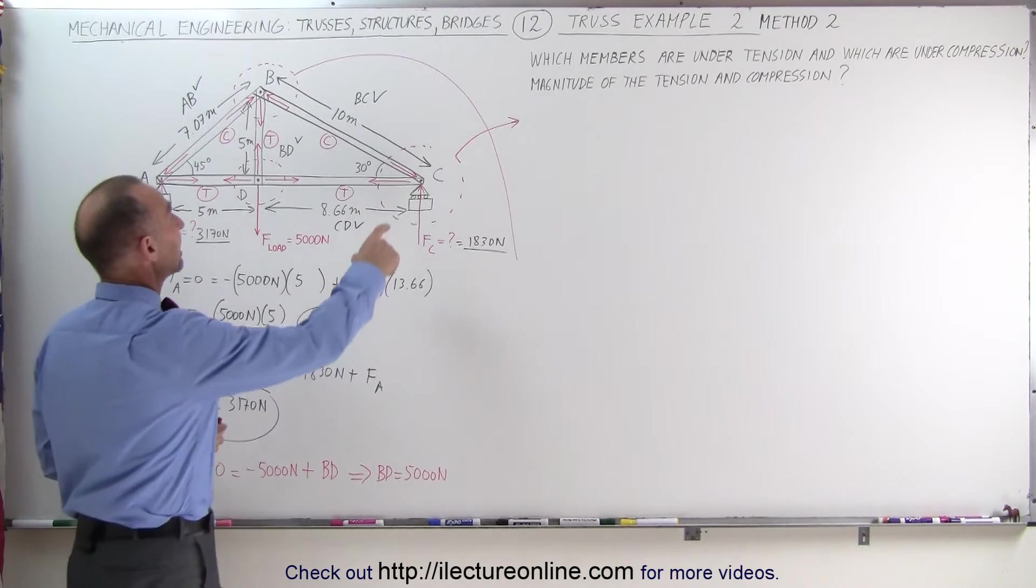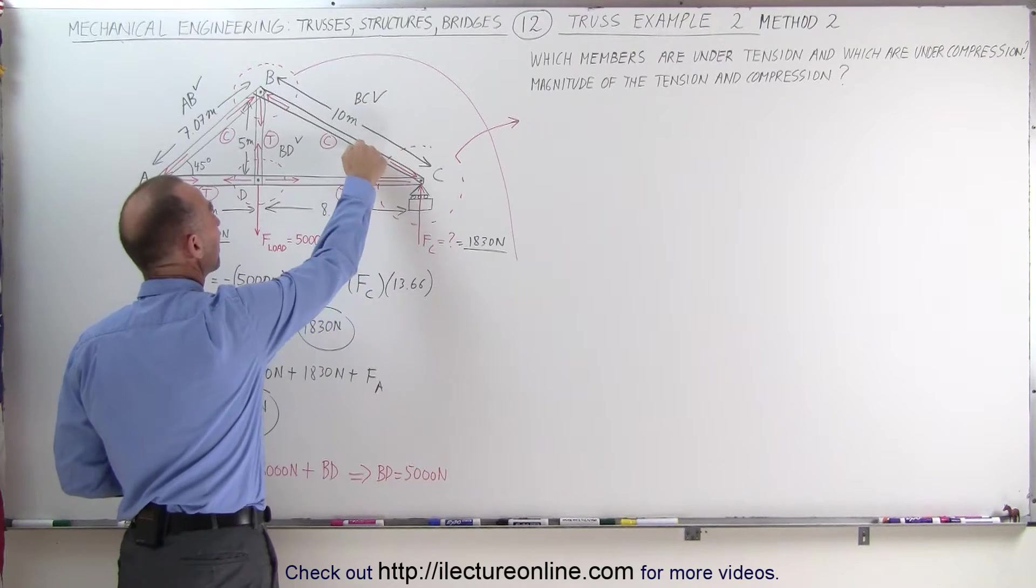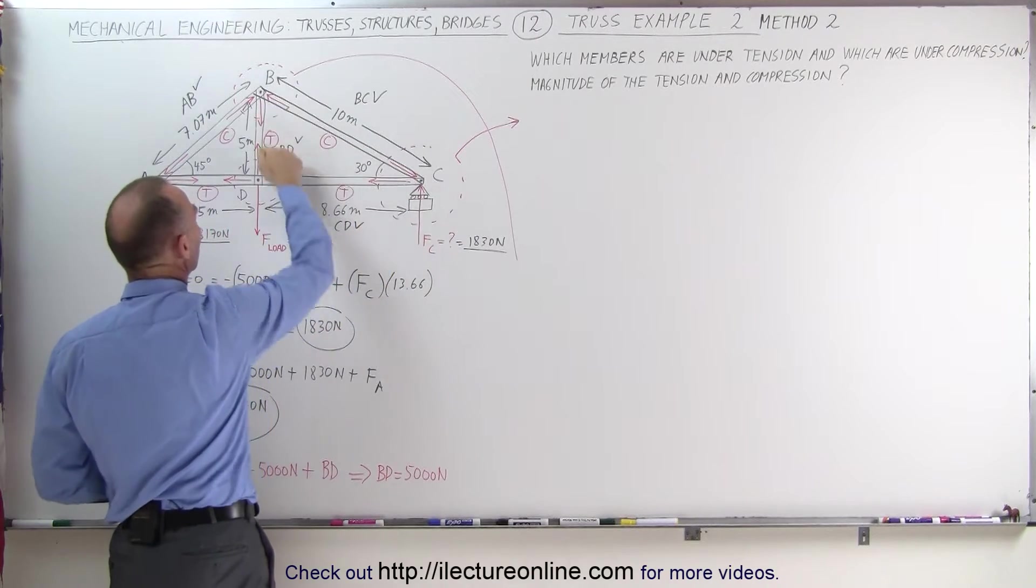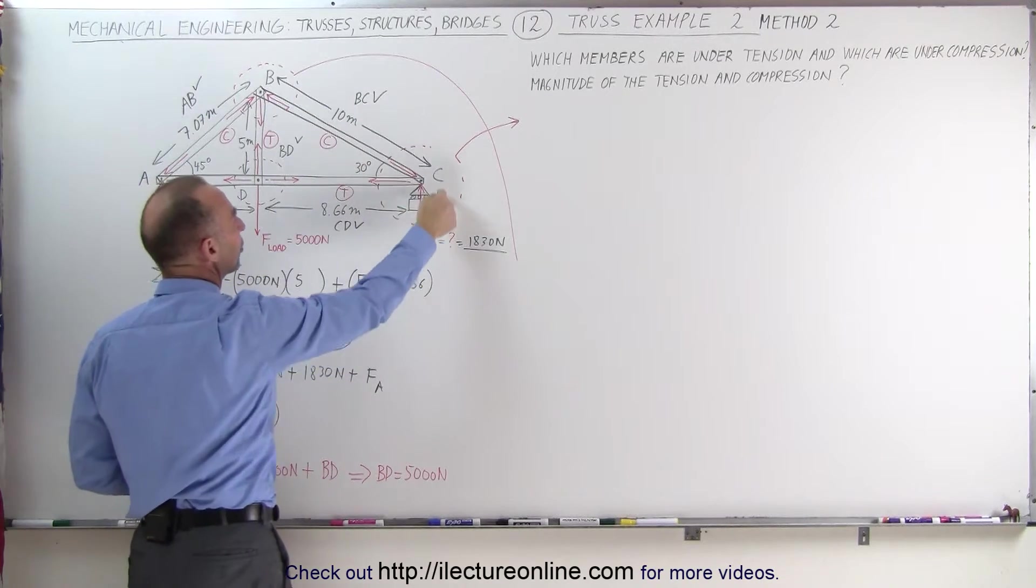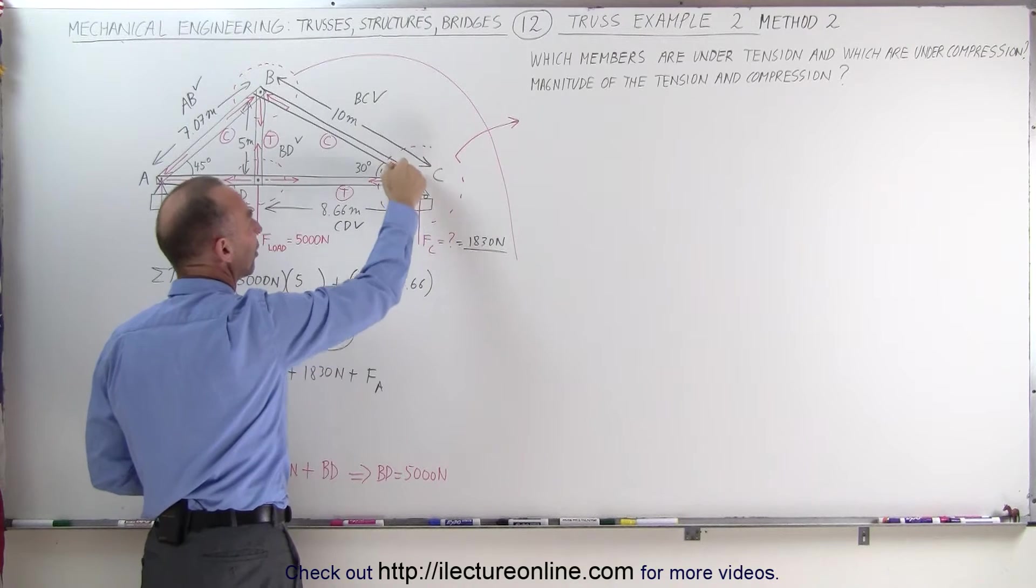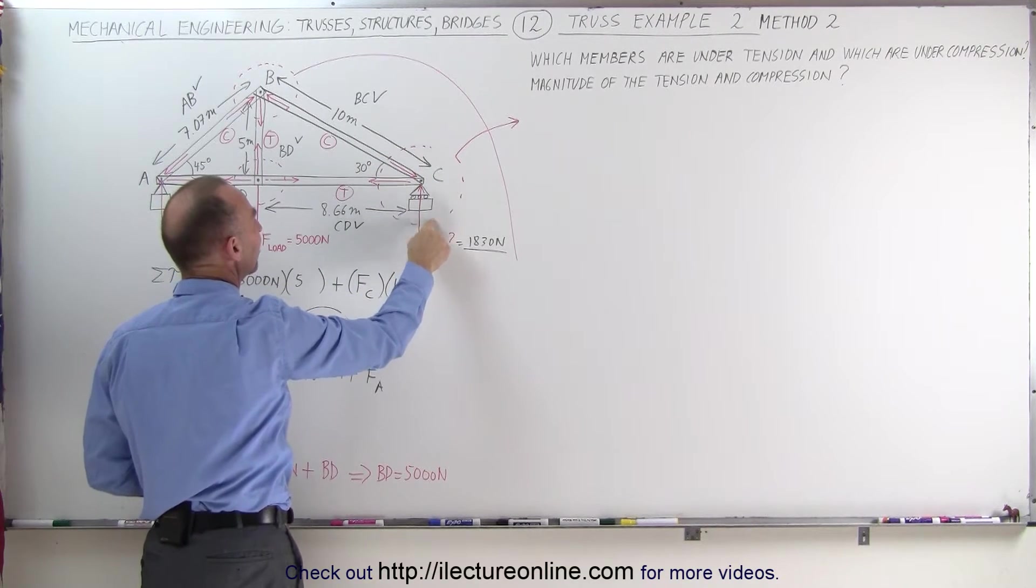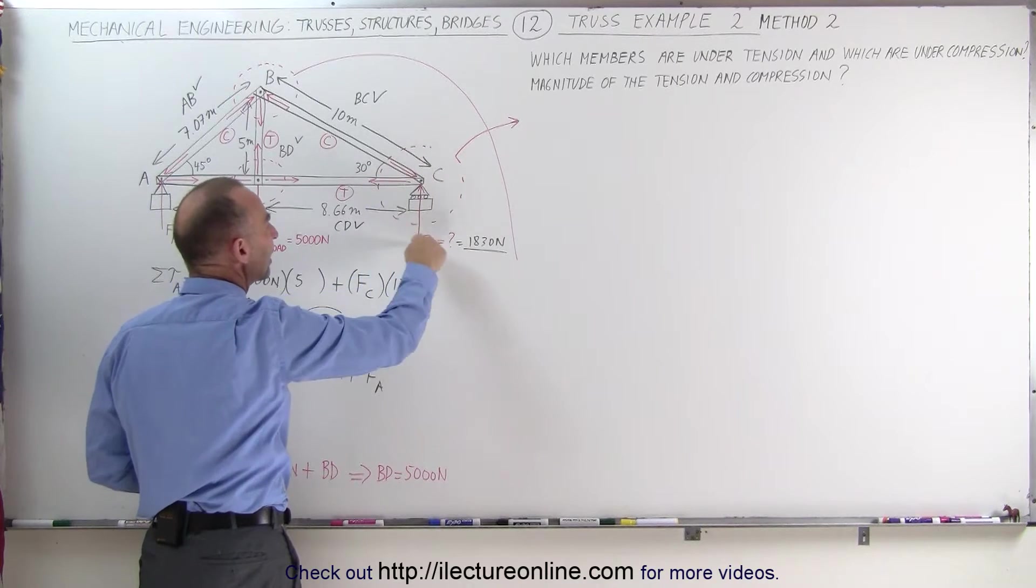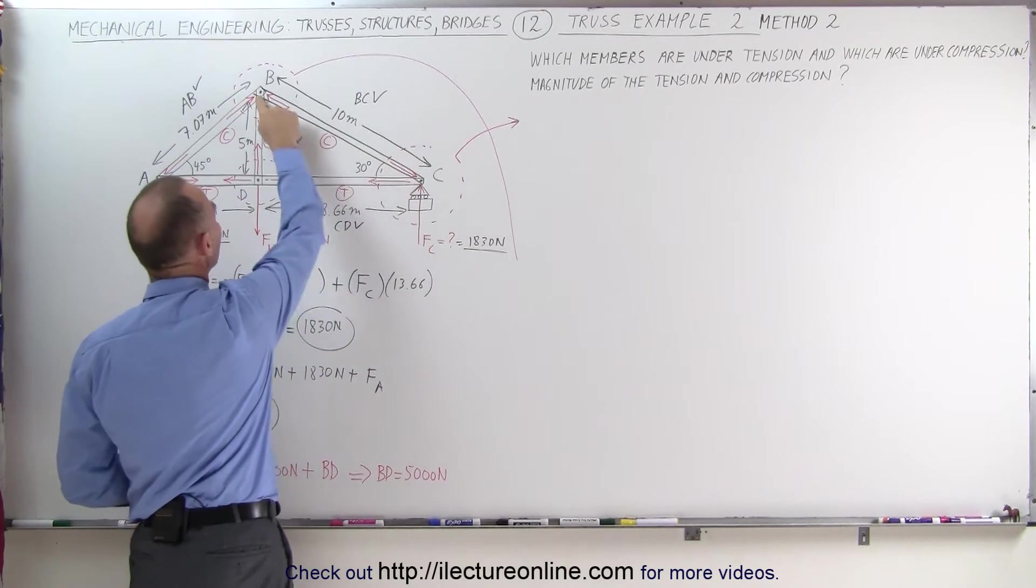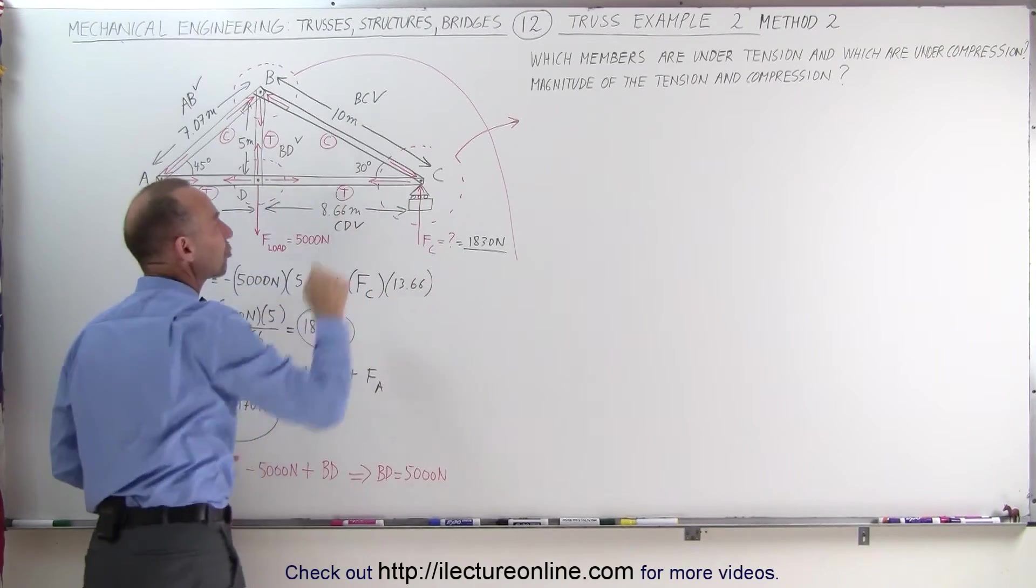If we need to calculate the forces in the members here, notice we have a right triangle here, and we can associate these three forces - the force of compression, the force of tension, and the force support here on Fc. We can associate the magnitude of these forces relative to the length of the beams of this triangle.